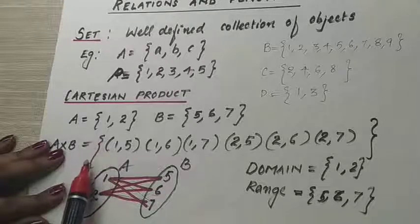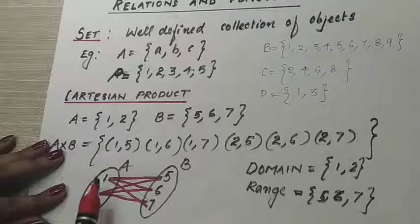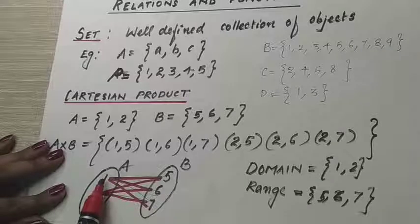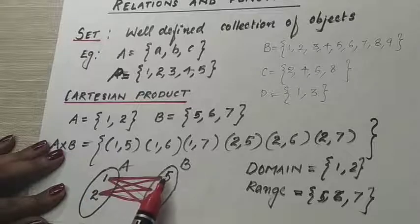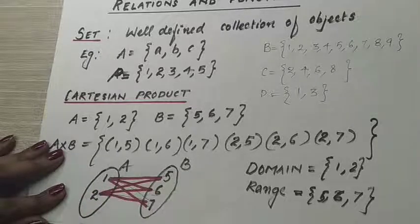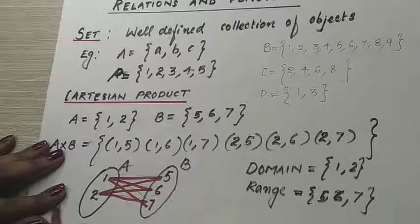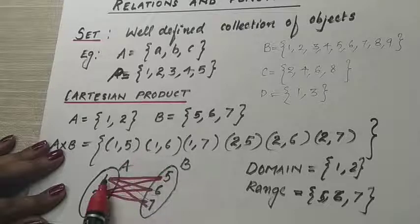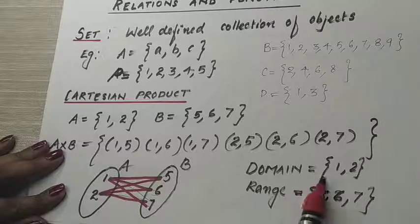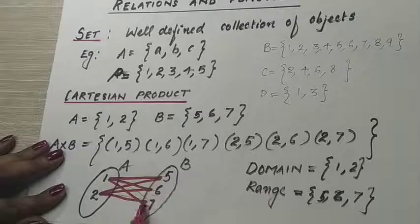To write the Cartesian product, first put the set bracket, then write ordered pairs: (1,5), (1,6), (1,7), (2,5), (2,6), (2,7). Here 1 is from the domain and 5 is from the co-domain — so 5 is called the image of 1. The elements {1, 2} form the domain and {5, 6, 7} are the range.